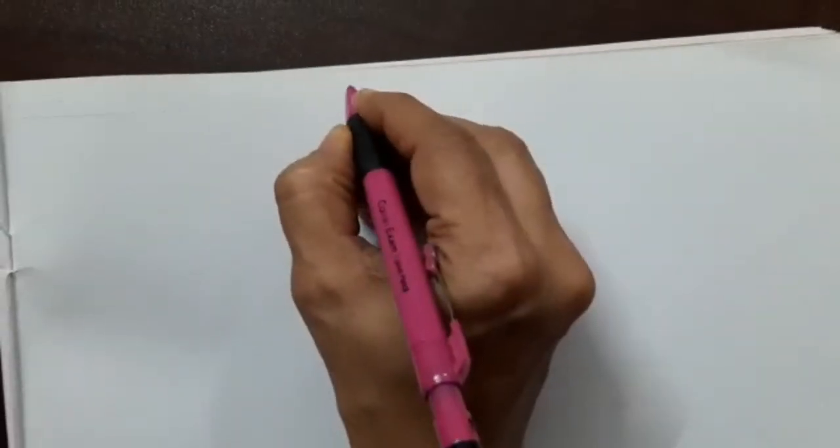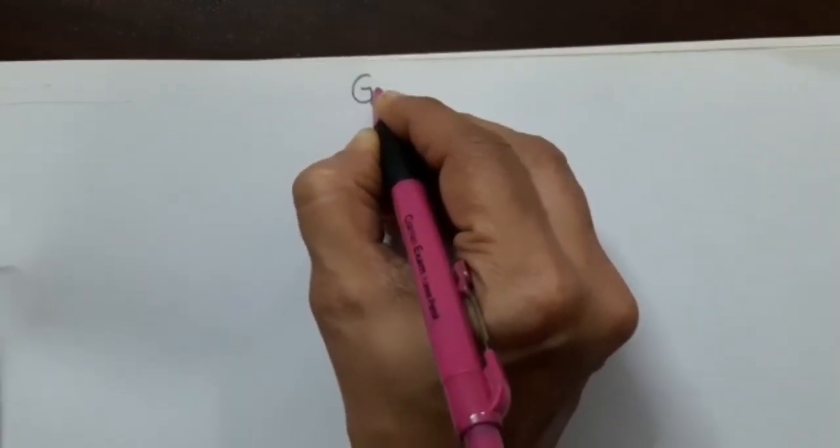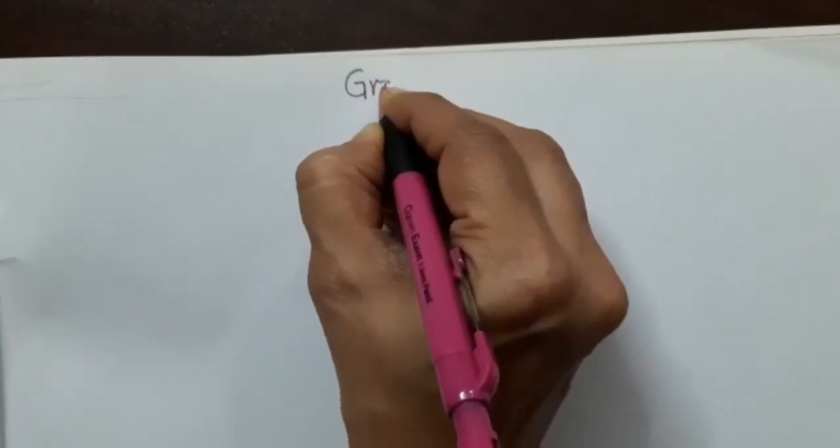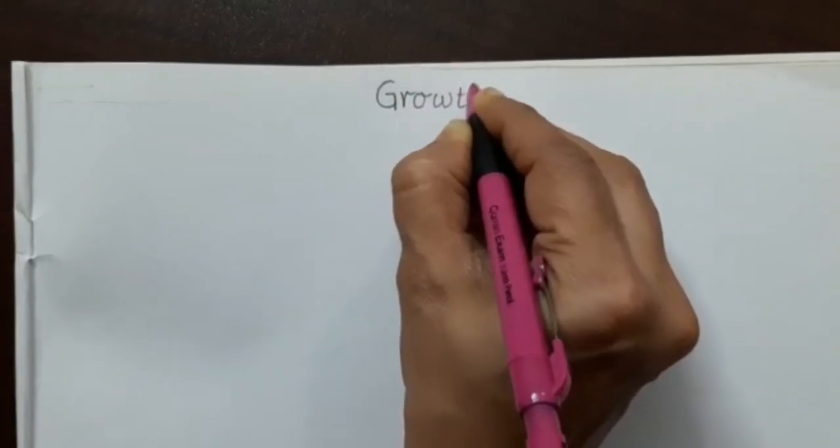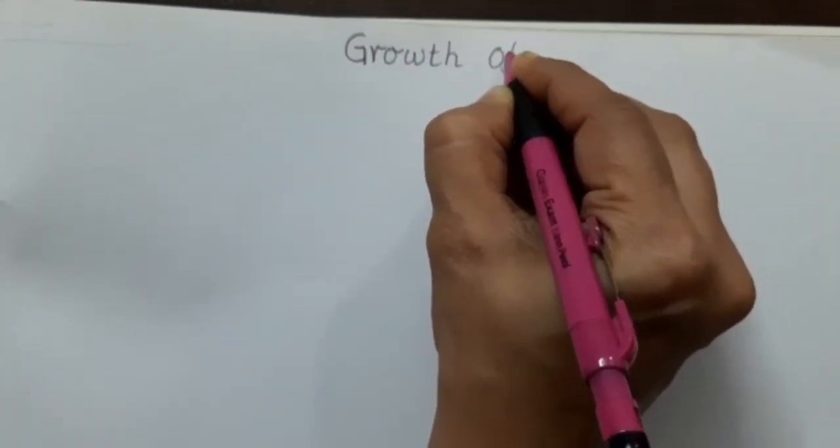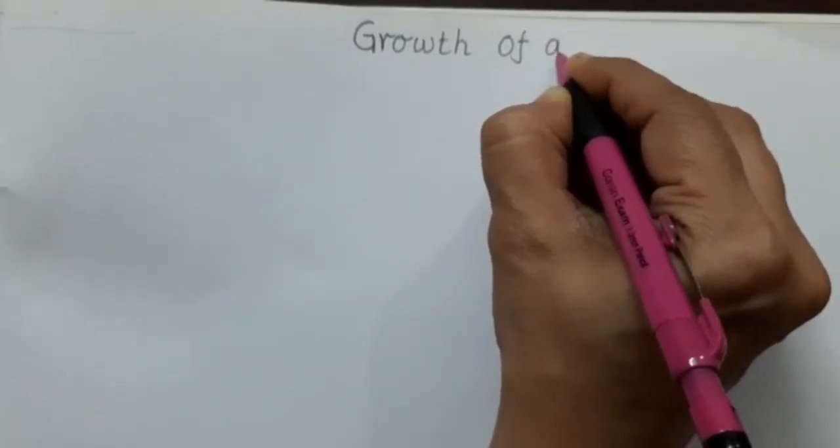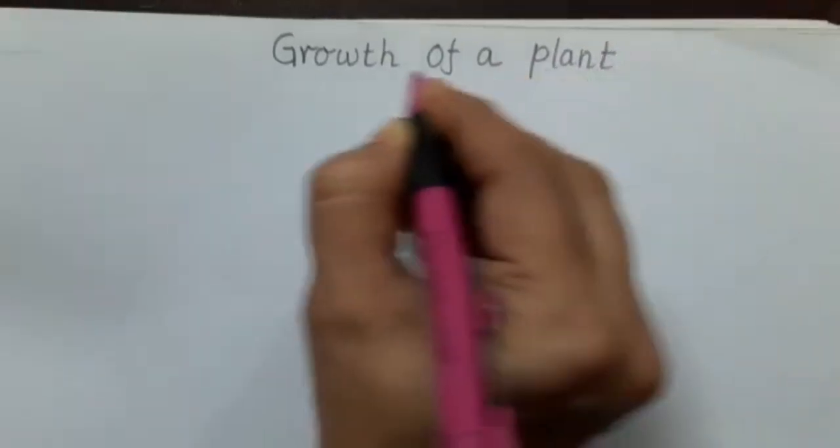Here we are going to write today's date. And let's write the heading: Growth. Write the spelling properly, G-R-O-W-T-H. Growth of a plant.